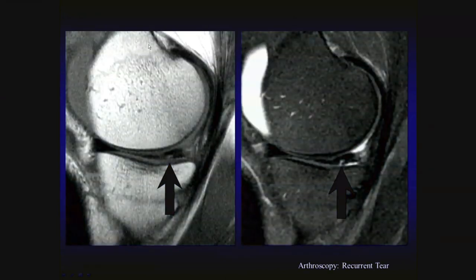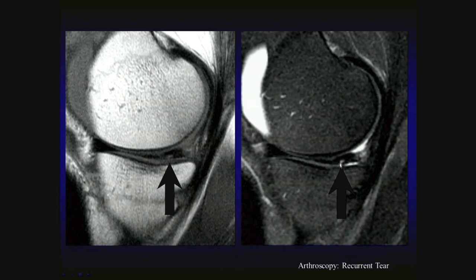Here, a proton density and a FASP echo T2-weighted fat-suppressed image shows signal extending to the inferior articular surface of the posterior horn of the medial meniscus in a patient who had prior partial meniscectomy. Importantly, T2-weighted signal in that exact corresponding area indicates fluid extending into a recurrent or residual meniscal tear cleft — arthroscopically proven recurrent tear following prior meniscectomy.